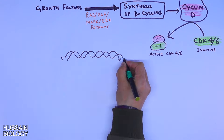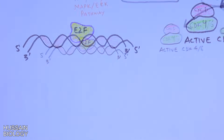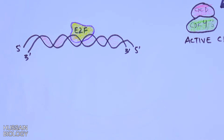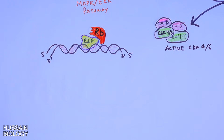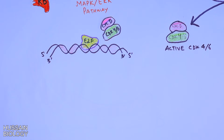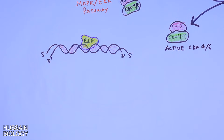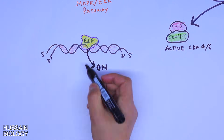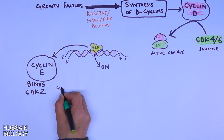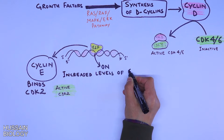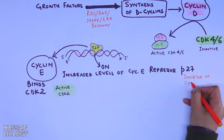The DNA molecule has E2F transcription factor bound to it, but E2F remains suppressed because the RB protein binds to it and prevents its expression. When active cyclin D-CDK4/6 phosphorylates RB and marks it for degradation, E2F genes get expressed and are switched ON. This leads to synthesis of cyclin E, which activates CDK2. Increased levels of cyclin E also inhibit P27, a repressor of cyclin E and CDK2.